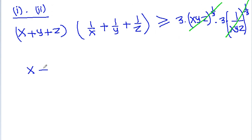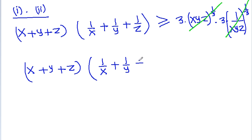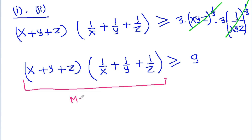So, (x + y + z)·(1/x + 1/y + 1/z) is greater than or equal to 3 × 3 = 9. Therefore, the minimum value is equal to 9.